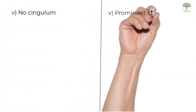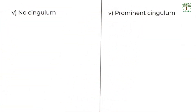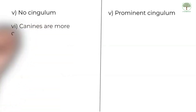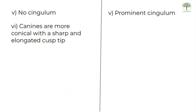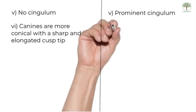On the lingual surface, the primary teeth lack a well-defined cingulum. The permanent teeth have a prominent cingulum, along with a well-defined lingual fossa. For the canines, the cusps of the primary teeth are sharp and pointed, giving it a conical appearance.